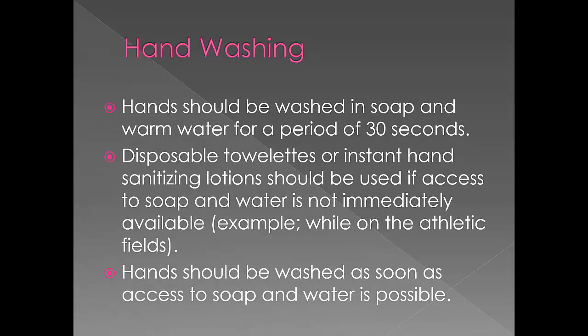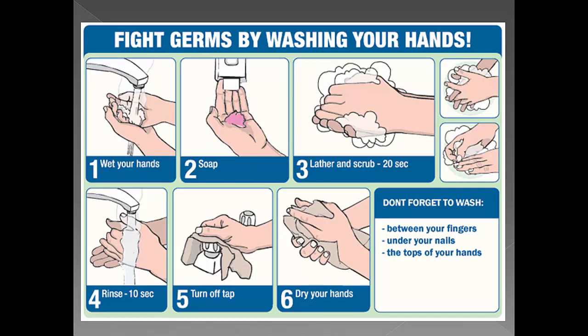Hands should be washed in soap and water for a period of 30 seconds. Warm water tends to work the best. Disposable towelettes or instant hand sanitizing lotions should be used if access to soap and water is not immediately available, for example out on an athletic field. Hands should be washed as soon as access to soap and water is possible. It is important to wet your hands, use soap, lather and scrub for 20 to 30 seconds, making sure to get underneath the fingernails, between the fingers, and the tops or backs of your hands. Rinse for another 10 to 15 seconds, then turn off the tap and dry your hands.